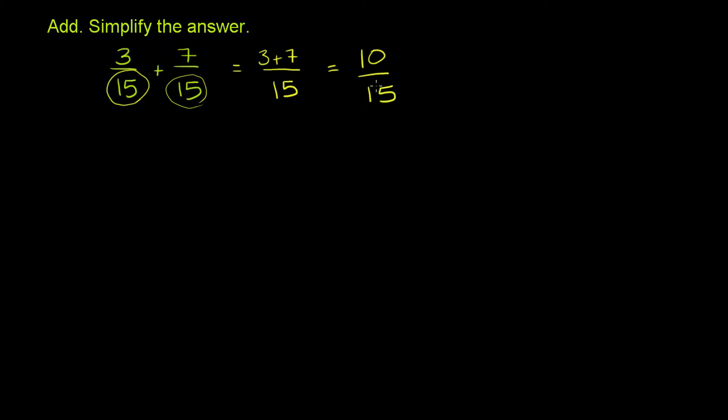Now if we wanted to simplify this, we look for the greatest common factor in both the 10 and the 15. And as far as I can tell, 5 is the largest number that goes into both of them. So divide the 10 by 5, and you divide the 15 by 5, and you get 10 divided by 5 is 2, and 15 divided by 5 is 3. You get 2/3.